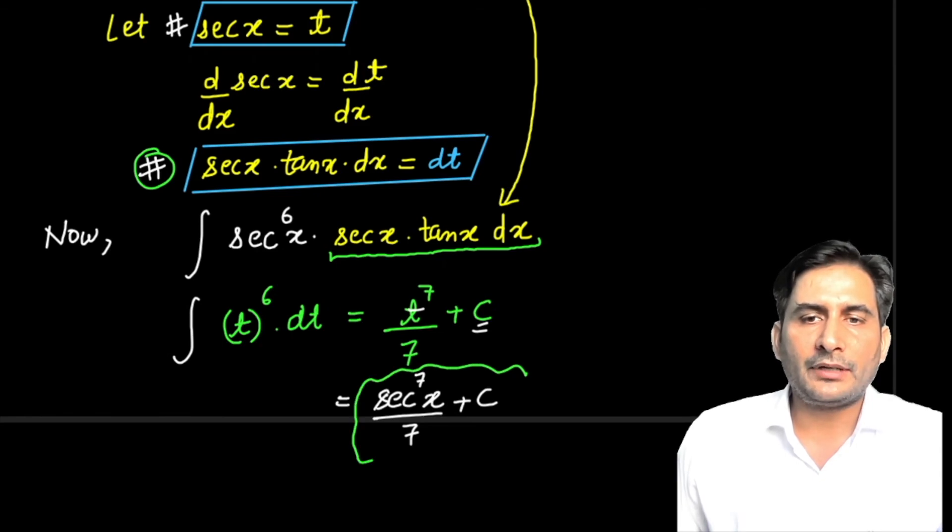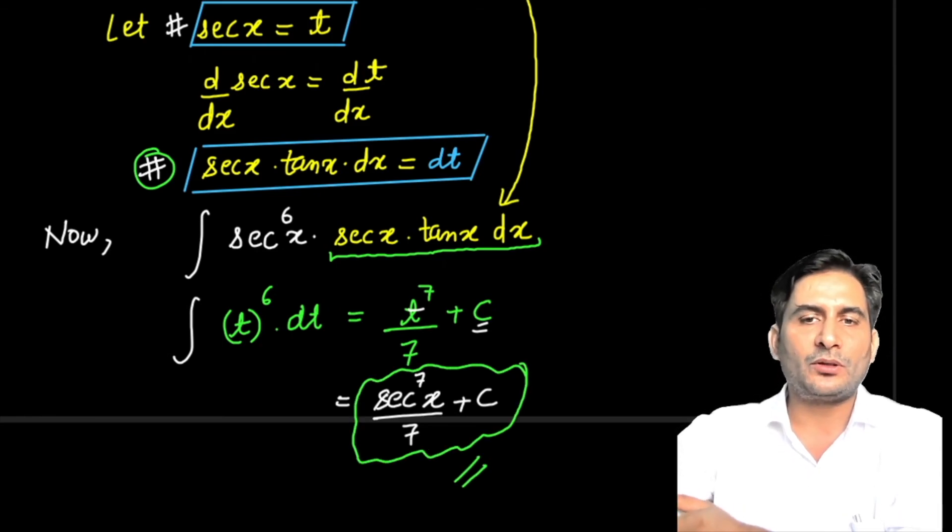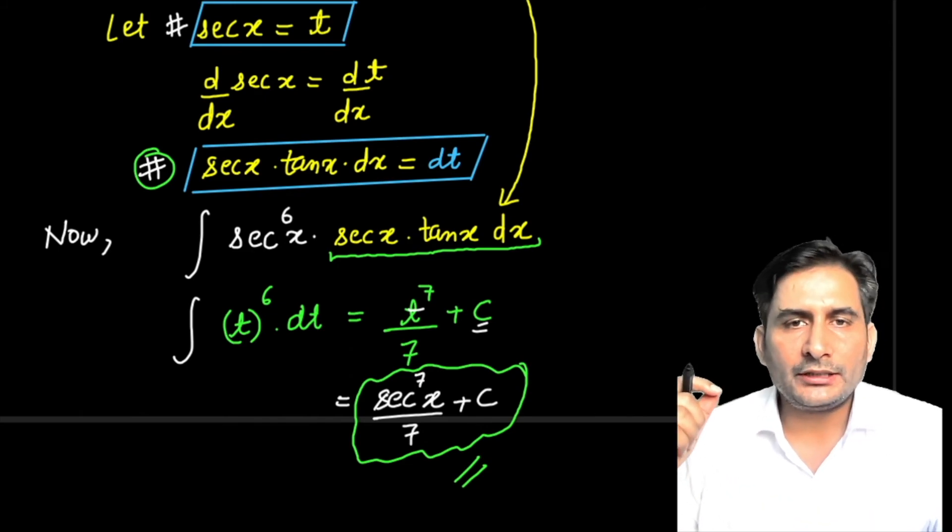This is the final answer. Don't solve it further. Sec^7(x) divided by 7 plus C. I hope this question is clear to you all.